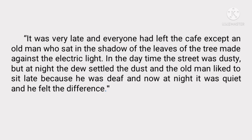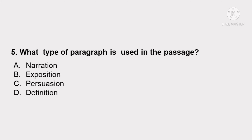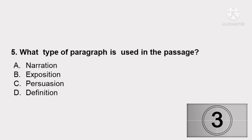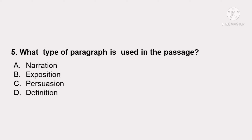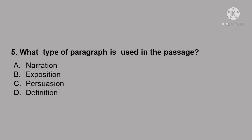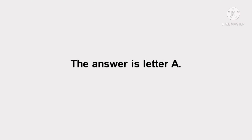It was very late, and everyone had left the cafe, except an old man who sat in the shadow of the leaves of a tree made against the electric light. In the daytime the street was dusty, but at night the dew settled the dust, and the old man liked to sit late because he was deaf, and now, at night, it was quiet and he felt the difference. What type of paragraph is used in the passage? A. Narration. B. Exposition. C. Persuasion. Or D. Definition. Time's up! What's your answer for the last passage? The answer is letter A: narration.